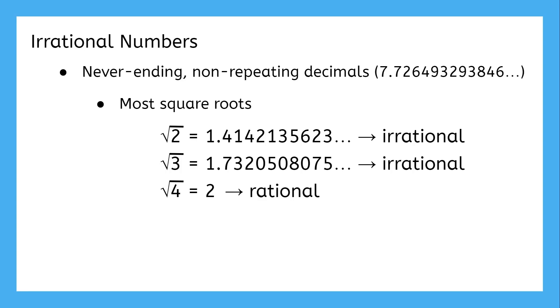Square roots of perfect squares are always rational, because they're integers. But the square root of pretty much any other number will be irrational.